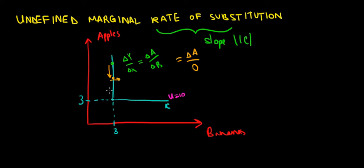So we would have a change in our apple consumption divided by zero. We have no change in the amount of bananas, and that would give us an absolute value that would give us infinity, since we are dividing a number by zero, the value that it's approaching is gonna be infinity.